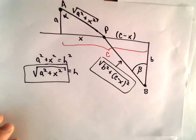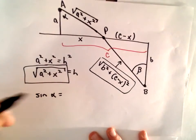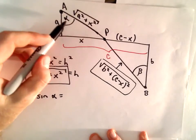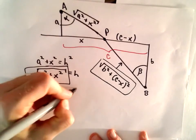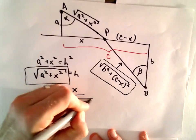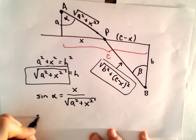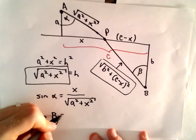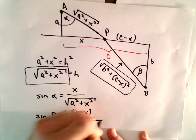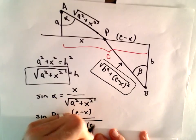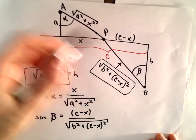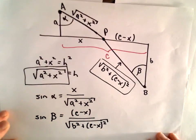Using trigonometry, sine is opposite over hypotenuse. So for angle alpha, we get sine of alpha equals X over the square root of A squared plus X squared. Likewise, we get sine of beta equals (C minus X) over the square root of B squared plus (C minus X) squared. So far I've only used the Pythagorean theorem and basic trigonometry.